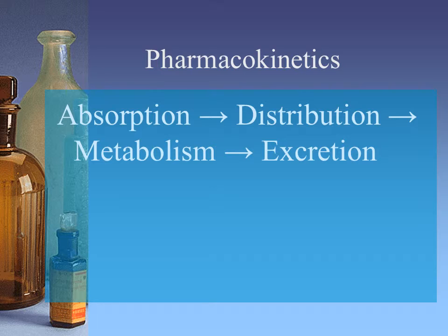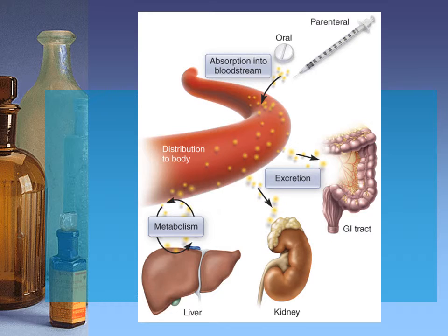Those are the two main ways medication is excreted, but there are other ways. Can you think of a few other ways in which medications are excreted from the body? Here's another, more visual look at the process of pharmacokinetics. You will see the medication in its form — oral or parenteral — is absorbed into the bloodstream. It travels through the bloodstream and is distributed to the body.